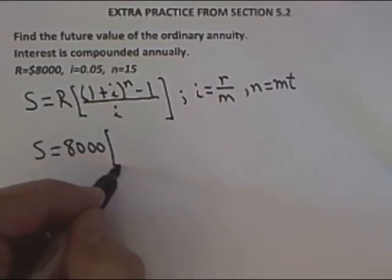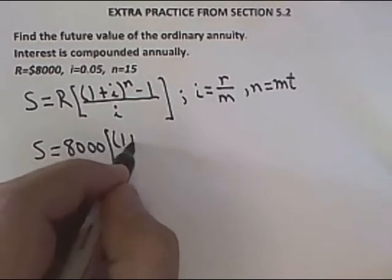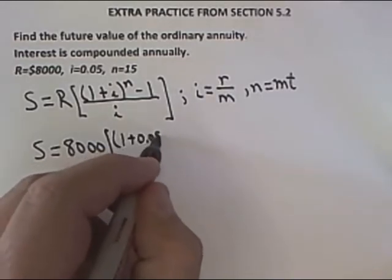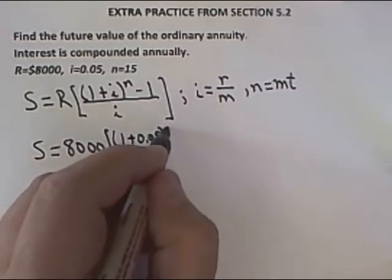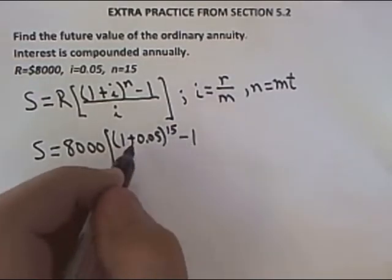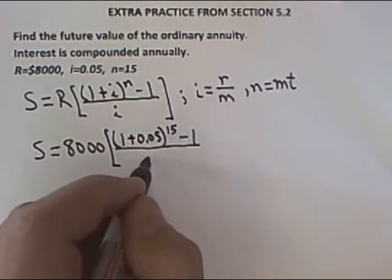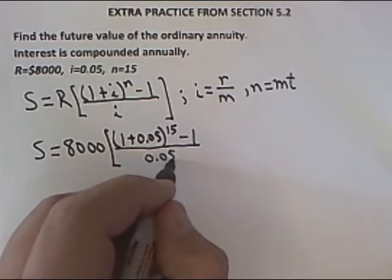Here, I just need to put $8,000 in for R, 0.05 for i, 15 for n, and then carefully use my calculator to figure out what S, which is the future value of that ordinary annuity, is.